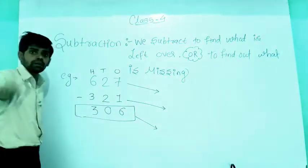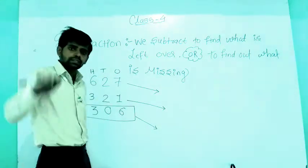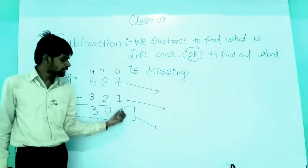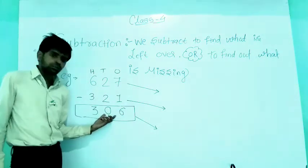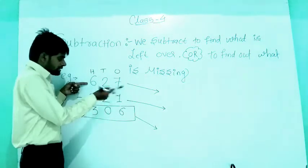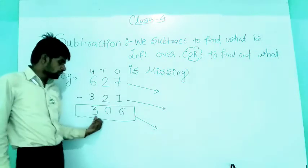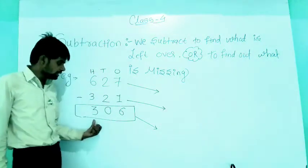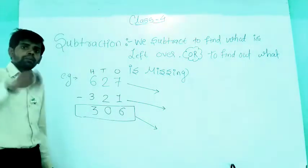So we subtract 321 from 627. Seven minus one gives us six, two minus two gives us zero, and six minus three gives us three. So 627 minus 321 equals 306. That is the answer.